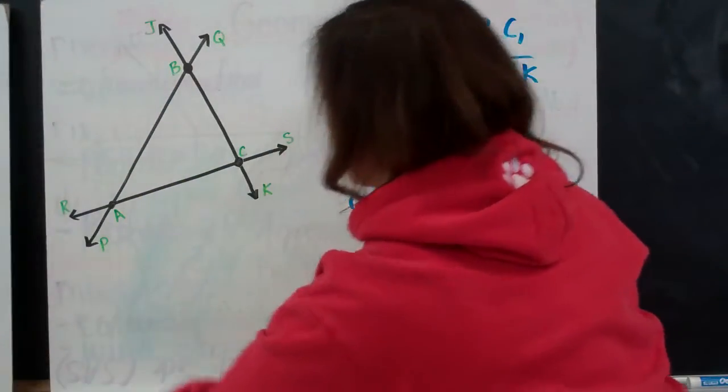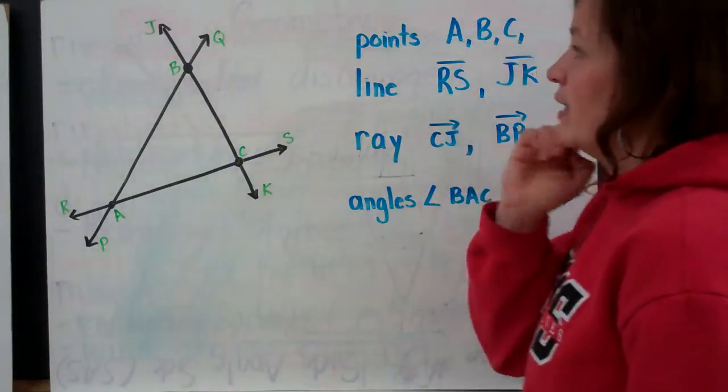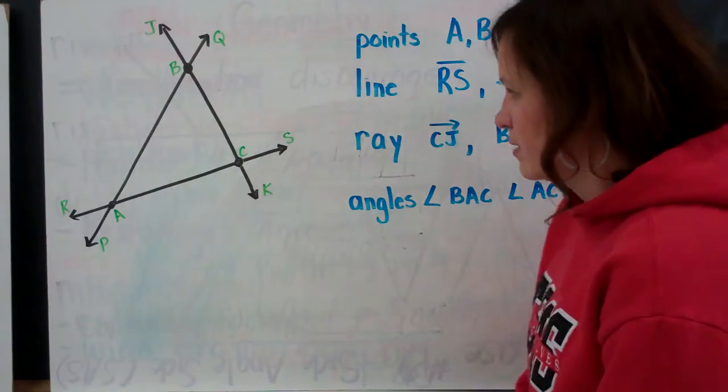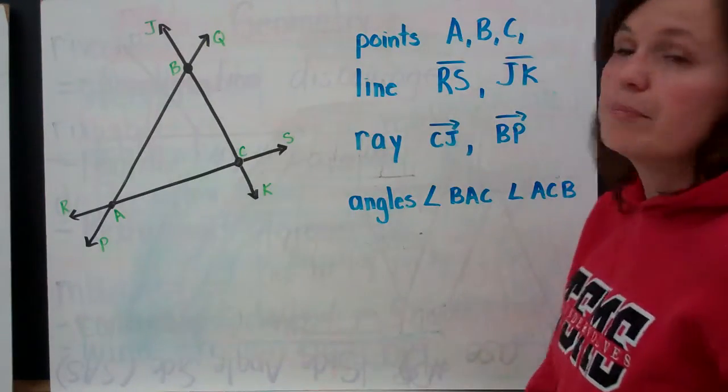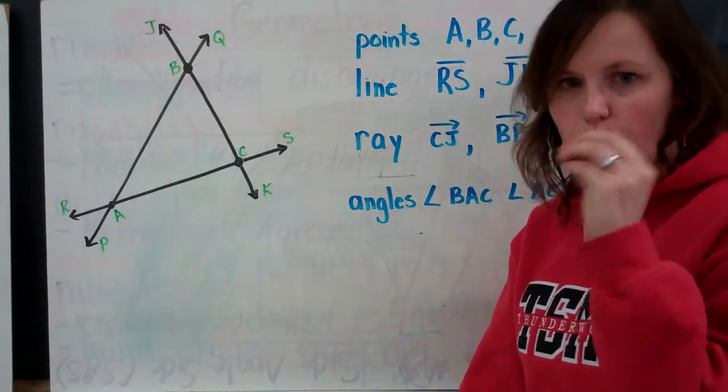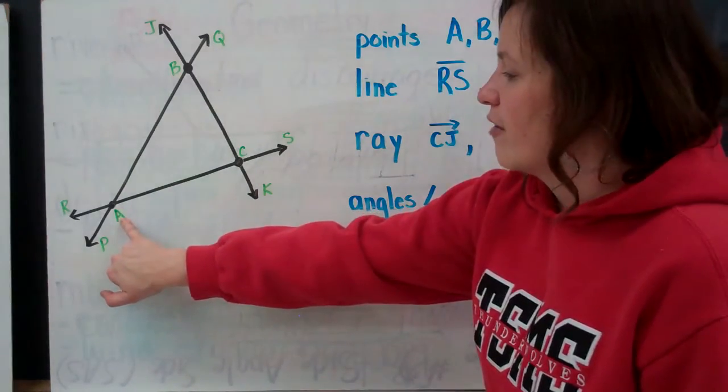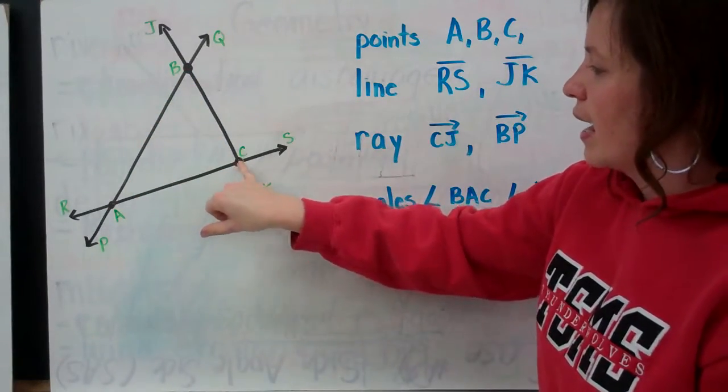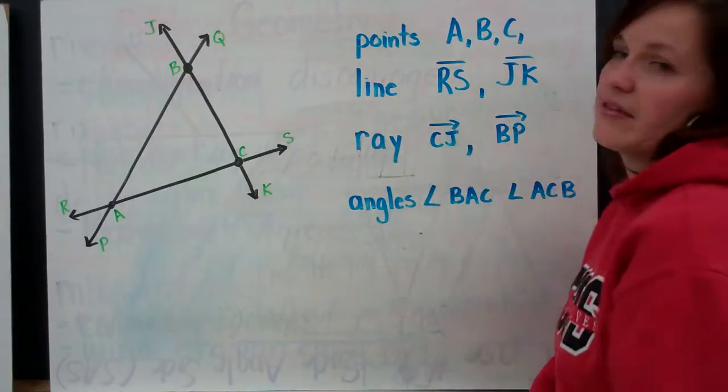So, let's look at our diagram. I have three lines and they intersect with other lines. I want to identify three points in my diagram. Remember, a point is identified with literally a point, a dot. And I have three of them. I have point A, point B, and point C. And I have identified them here.